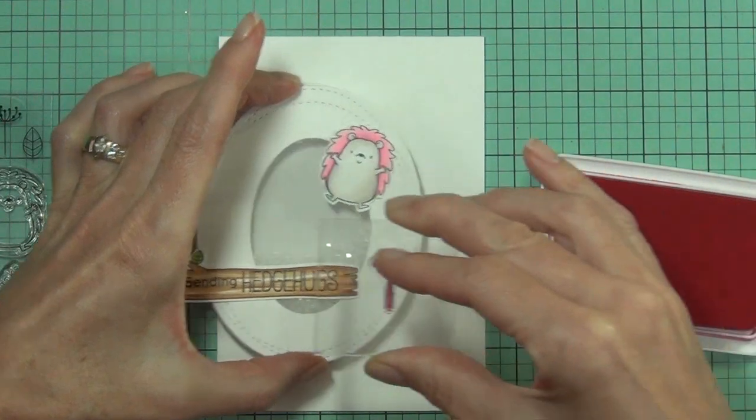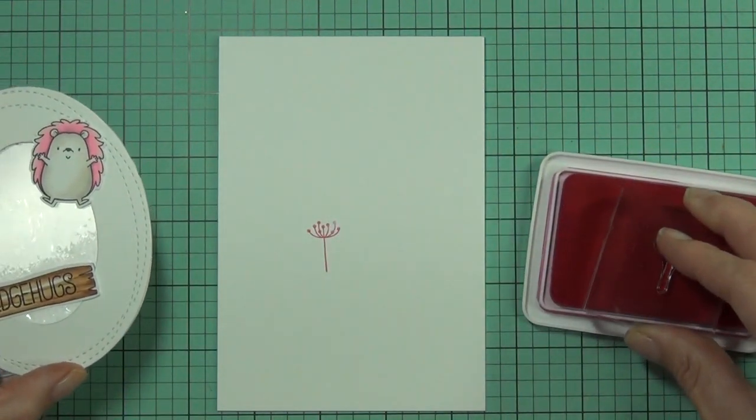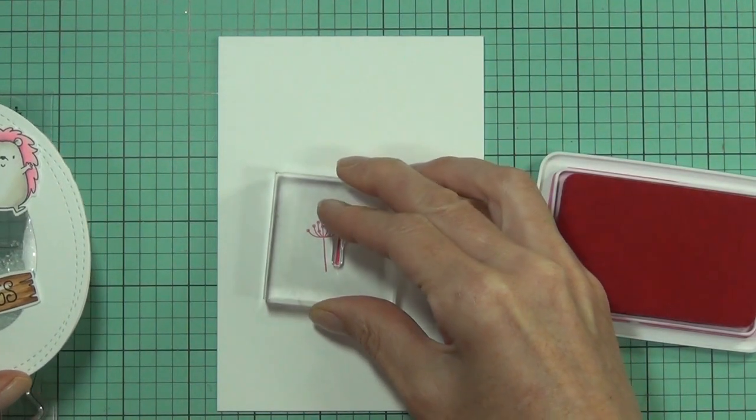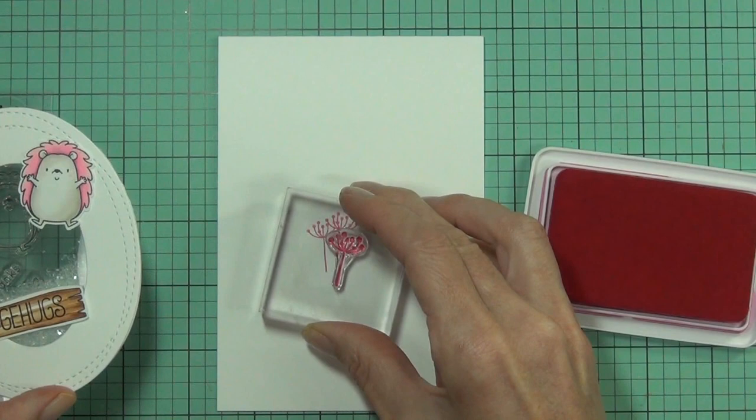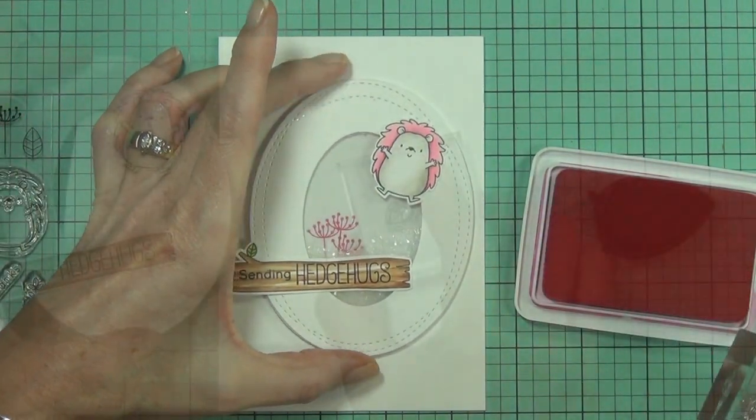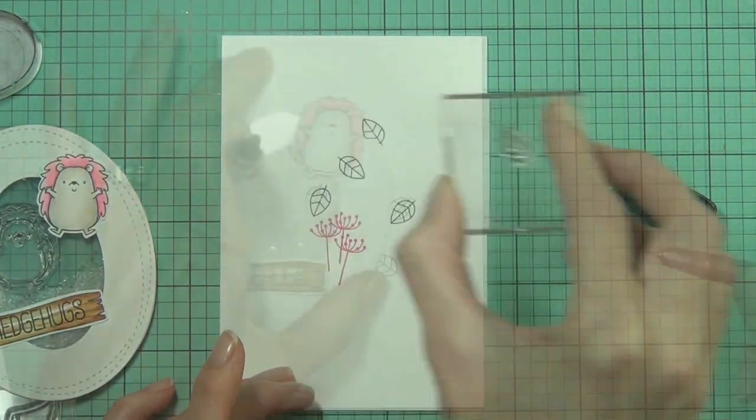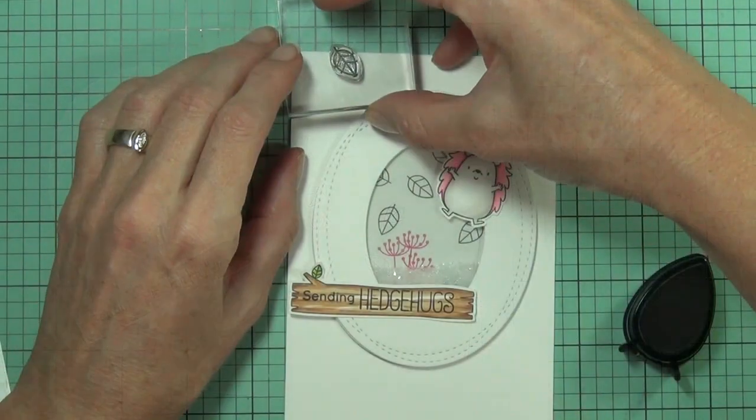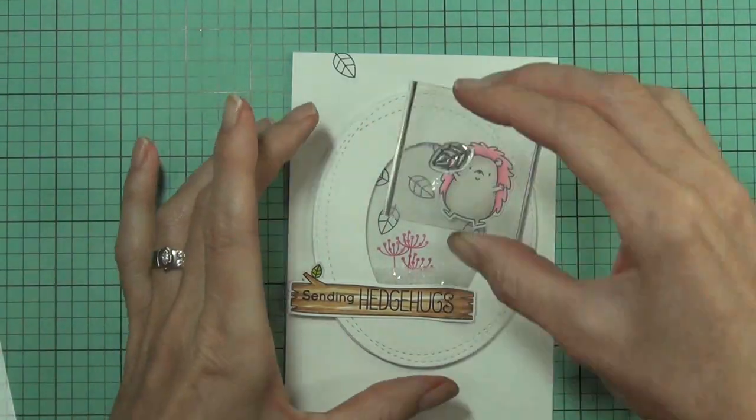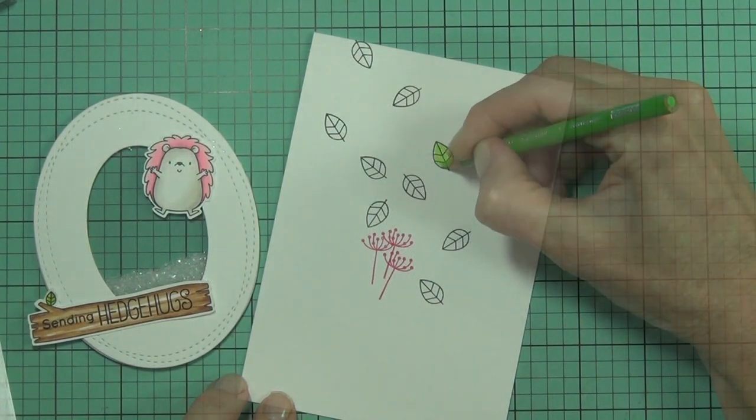I used Onyx Black for my sentiment, and then this is the Ranger - oh gosh, it's one of the pinks and that'll be listed as well - it's the hot pink dye ink. It's really sweet and I thought it'd be sweet to add some flowers behind and then some leaves. And I've got a mark on my card up in the top left corner, so creative license - I added some leaves coming from there as well.